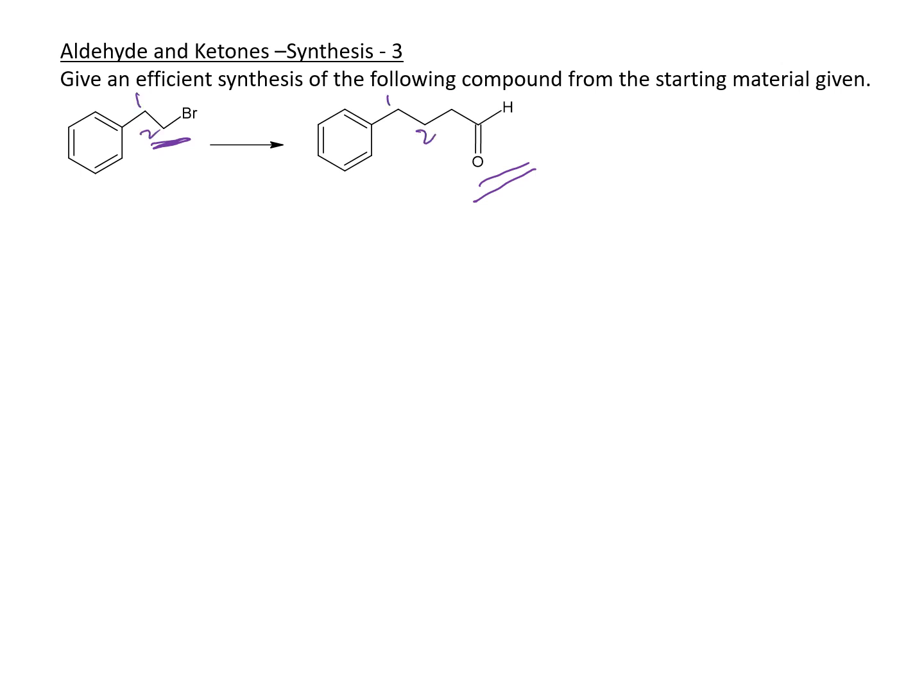Our second observation is that we have added carbons. Here we have one, two carbons; here we have one, two, three, four carbons, which means we need to add carbons. When you have to form a carbon-carbon bond, you need to think about a few reactions. The most common one is Grignard, which adds carbon-carbon bonds and also forms an alcohol, which might be useful because we need to add an aldehyde. An alcohol will give us an aldehyde by oxidation.